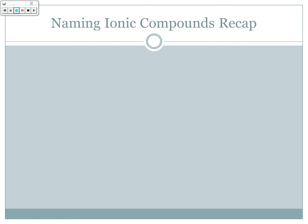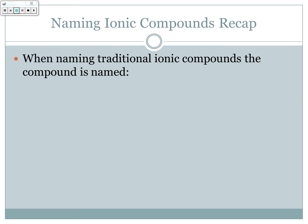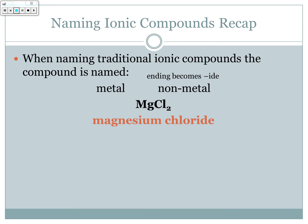When naming traditional ionic compounds, the compound is named metal then non-metal. The ending of the non-metal atom changes to -IDE. So for example, with magnesium and chlorine, chlorine's ending -INE changes to -IDE and we get magnesium chloride. The subscript 2 doesn't affect the name — it just needs to be magnesium chloride.